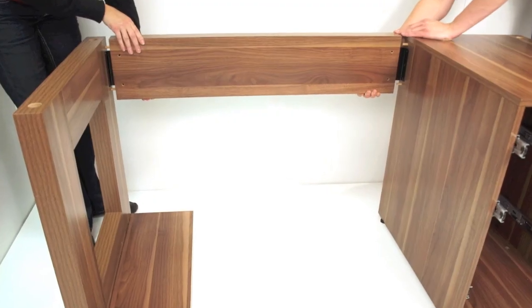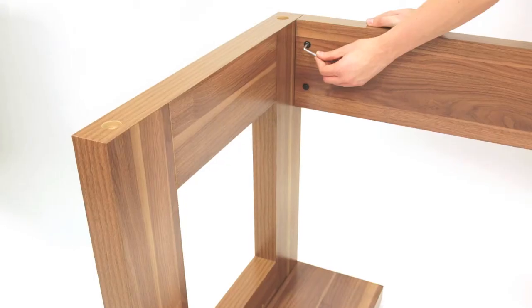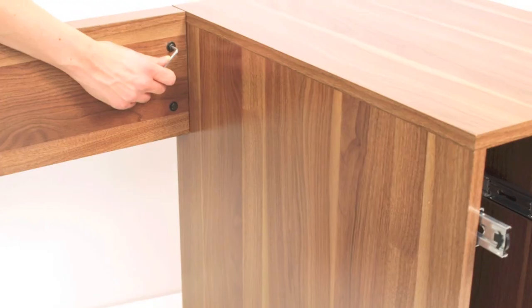Push the modesty panel into position as shown. You may need someone to help at this stage. Secure this in place using screws and washers labelled number 5 and 6.